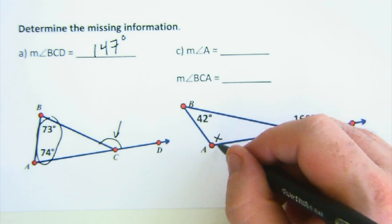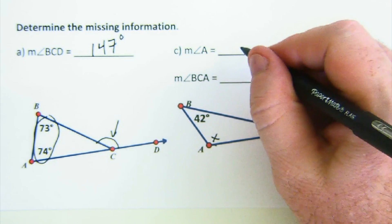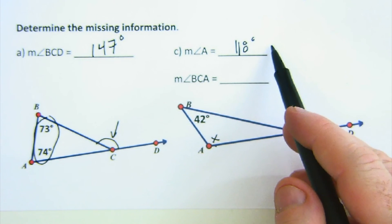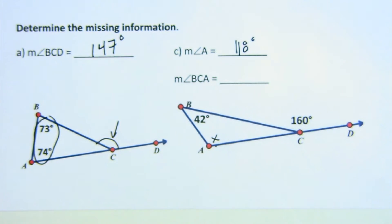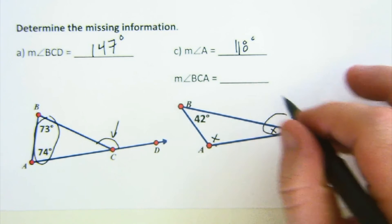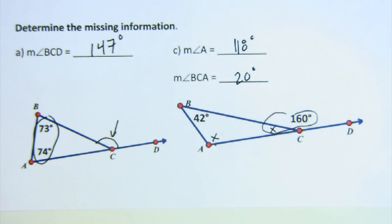And then finally, if they want to know this angle, we know that these are a linear pair, so that has to be 20 there. So, this particular worksheet is just you working out the mechanics of the theory in application. Thank you.